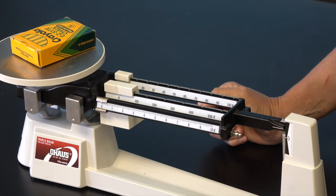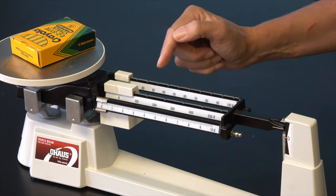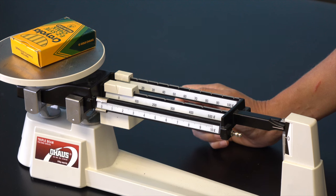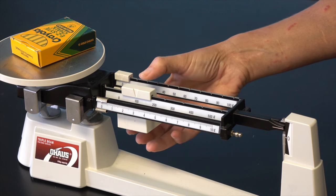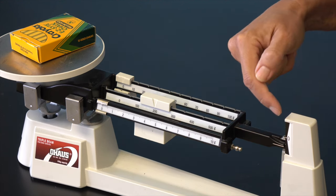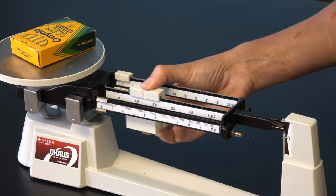Now we have to move the riders on our balance to increase the mass on the beam side. First, the rider with the most mass, the middle one, the 100-gram one, is moved. It's very important that this rider is always moved into one of these notches and not allowed to rest between notches. The rider is moved notch by notch until the pointer falls below the zero mark. Then the rider is backed up one notch.